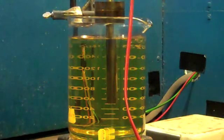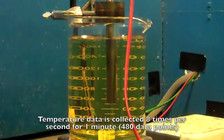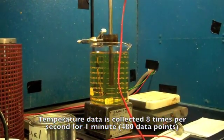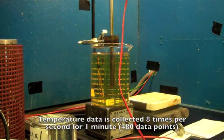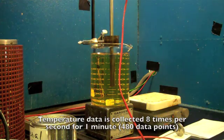As soon as the probe is placed into the quench oil, we start collecting data. The computer program collects temperature readings eight times a second for one minute. Our cooling curves are generated based on 480 data points.